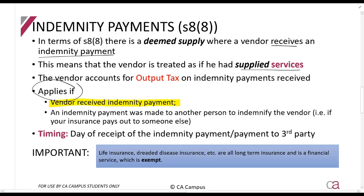Or, an indemnity payment was made to another person to indemnify the vendor. So my truck driver drives through the wall of the business next door and my insurance company has to pay for the wall to be replaced. I will still be charged output tax on that. I will still have to pay output tax to SARS. So again, the two situations: where my computer or asset explodes and the insurance company pays me, second one is where something goes wrong and I have to pay someone else. My truck driver drives through the building of my neighbor and my insurance company has to pay out. Those two situations.